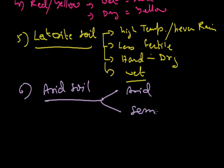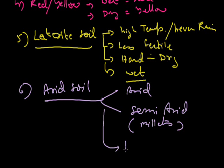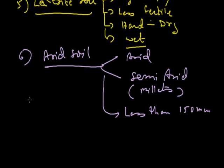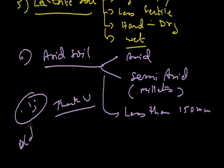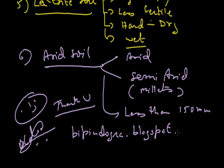In semi-arid regions, cultivation of millets are there. These regions get less than 150 mm or 15 cm rainfall. So that's all in this part of the chapter. Any kind of problems, any doubt, you can call me. My blog is bitcoindoga.blogspot.in—visit it. Thank you.